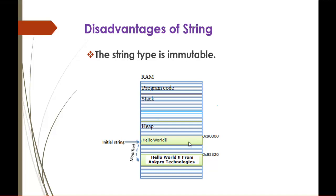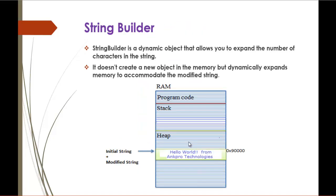To overcome this, StringBuilder came into existence. StringBuilder is a dynamic object that allows you to expand the number of characters in the string. It solves the immutability problem of string. The key feature is that it does not create a new object in memory, but dynamically expands memory to accommodate the modified string.